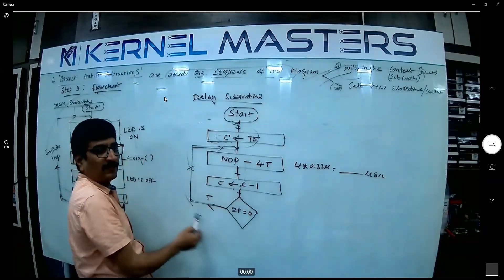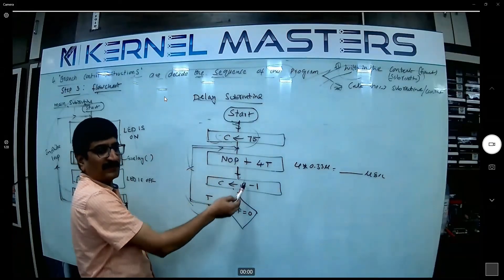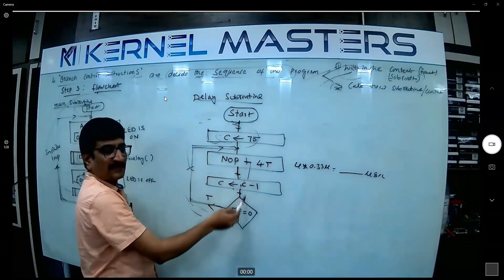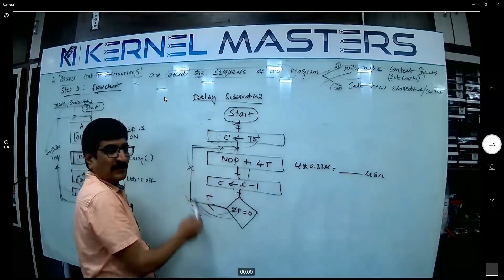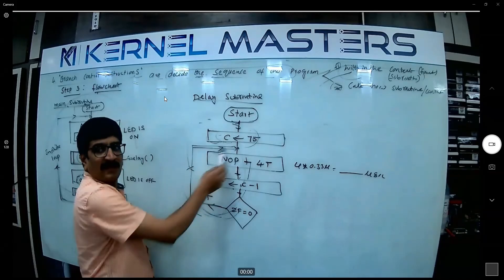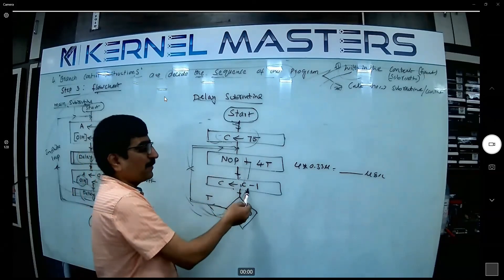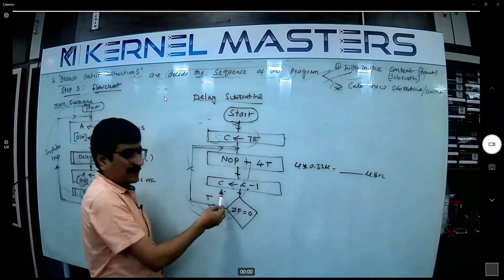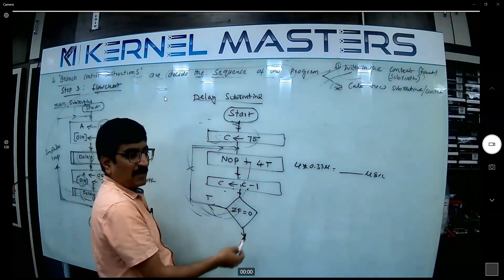Again NOP, again decrementing. Now 75 minus 1 is 74. Next one, 74 minus 1 is 73. Next one, 73 minus 1 is 72, running around. Now 74, 73, 69, running around. Now, so but some moment what happened? Some moment what happened? Zero. When our C value is zero. Tell me C value zero.